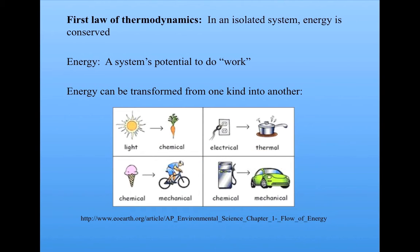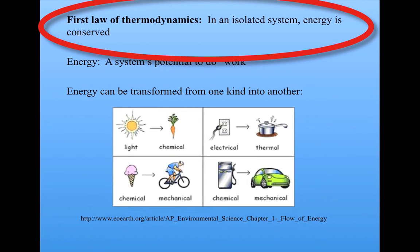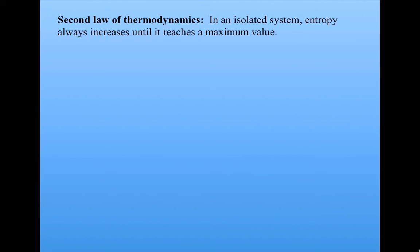Now according to the first law, in an isolated system, while energy can be transformed among different kinds, the total amount of energy in the system always remains the same. That's what's meant by energy is conserved. Now the second law of thermodynamics says that in an isolated system, entropy always increases until it reaches a maximum value.